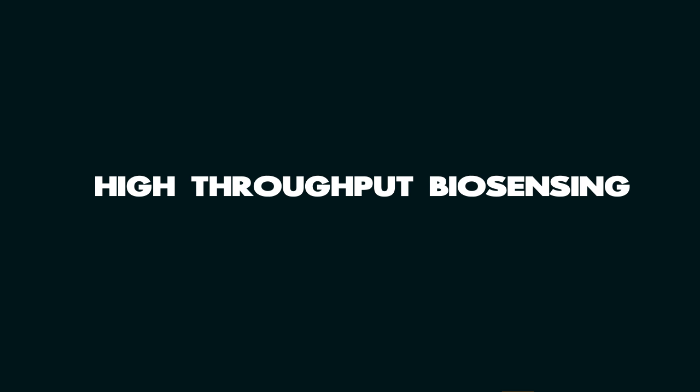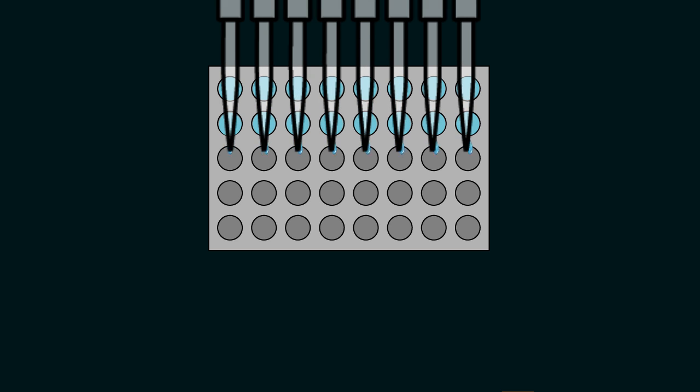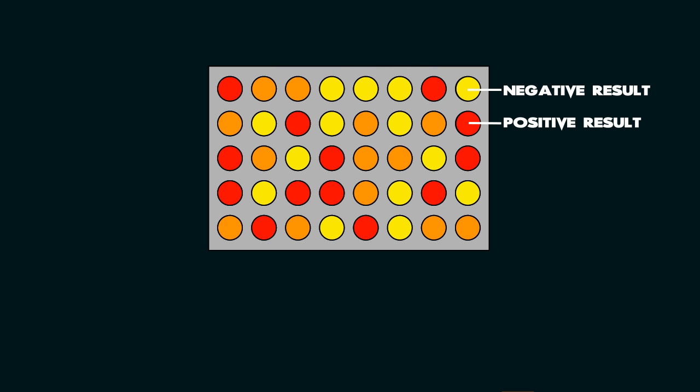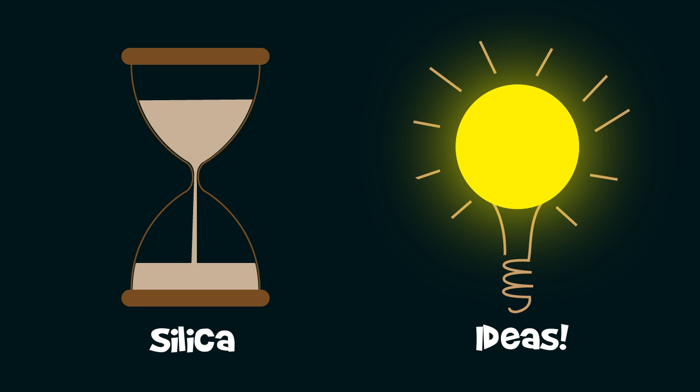Furthermore, such a design could be used to create high-throughput biosensors, wherein different biosensors can be immobilized in different wells of a 96-well plate. This can be used to simultaneously detect the presence of multiple targets in a sample at once, paving the way for cheap and fast biosensing. All this due to a little bit of sand and a lot of modular thinking.